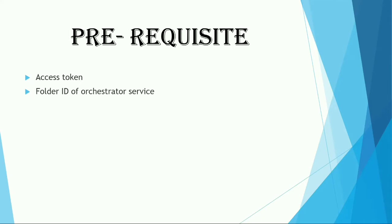But before testing this API and getting our UiPath process data, we need an access token and folder ID. I have already shown you how we can authenticate and get the access token, and also how we can get the folder ID in my previous video. So let's go ahead, assuming that the access token is generated and we have the folder ID of our Orchestrator service.